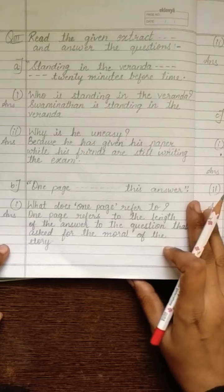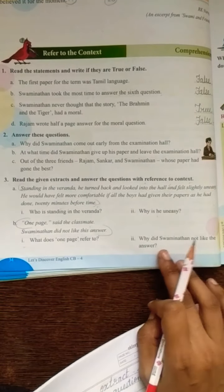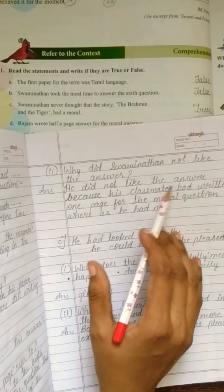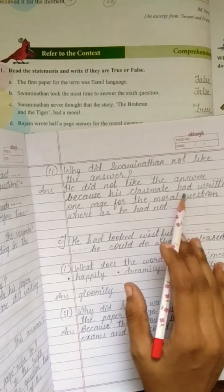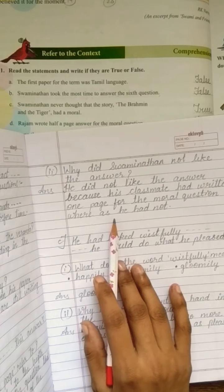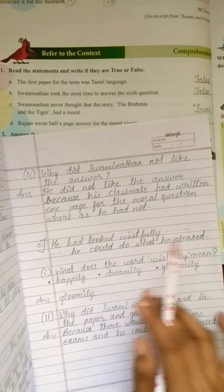Now, come to B question. What is the question B? Why did Swaminathan not like the answer? Swaminathan ko answer kyun nahi achcha laga? Let's see. He did not like the answer because his classmate had written one page for the moral question. Whereas, he had not.